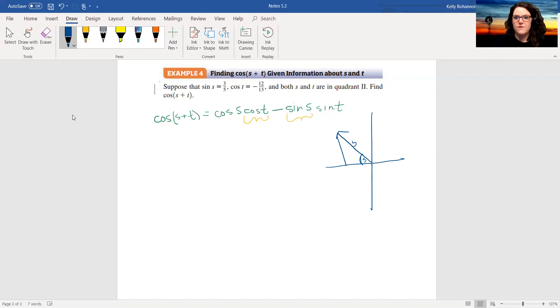My hypotenuse is five. Remember sine is opposite over hypotenuse, so this is three, but this is super easy because it's a Pythagorean, so it's a three, four, five. The only thing I have to remember is I'm in quadrant 2, so all students take calculus. Cosine of s is going to be negative 4 over 5.